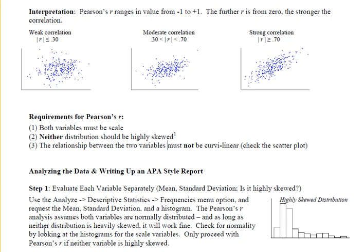We just reviewed Pearson's R, which ranges in value from negative 1 to positive 1. The farther Pearson's R is from 0, the stronger the correlation.